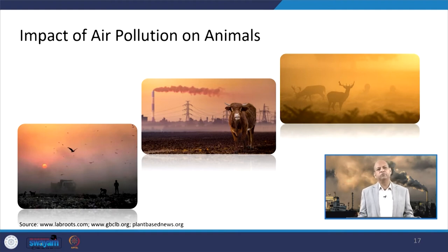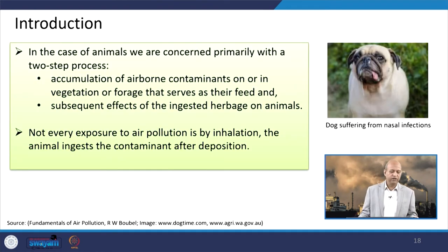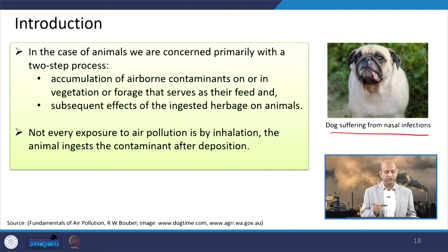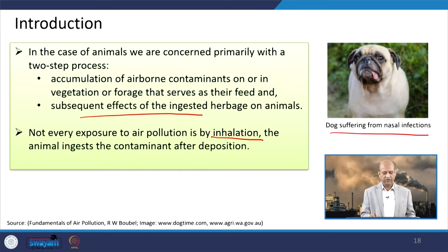Now we talk about animals — how animals are affected by air pollution. Since they also inhale air, if polluted air is inhaled, their respiratory system as well as other organs can get affected. For example, a dog can suffer from nasal infections due to polluted air. Accumulation of airborne contaminants in vegetation or forage that serves as their feed means animals consume these pollutants and experience subsequent negative effects. Exposure to air pollution is not only by inhalation — it can also go through ingestion, through the skin, and through other pathways.